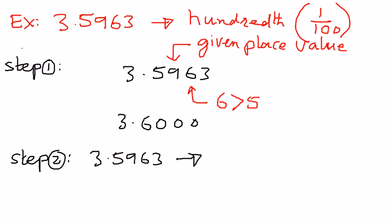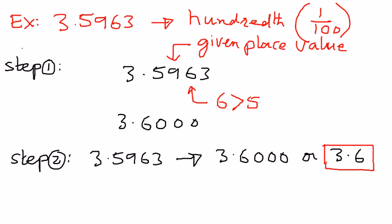We can also write it as 3.6 and drop the trailing zeros, since zeros after the last significant decimal digit do not add meaning. This is how we use place value to round a decimal number. In my next presentation, we shall see how to perform addition with decimals.